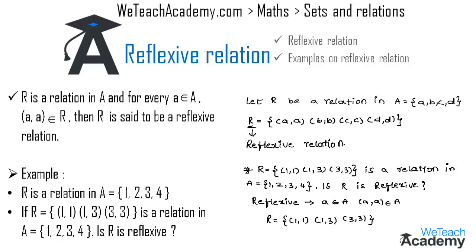The elements of set A are {1, 2, 3, 4}. The ordered pairs (1,1) and (3,3) satisfy the condition to be reflexive. But the set R does not contain the ordered pairs (2,2) and (4,4), so R is not a reflexive relation.